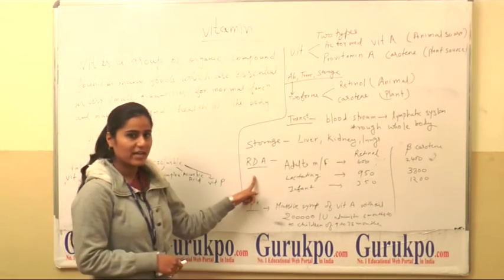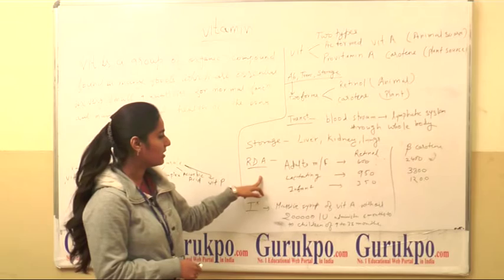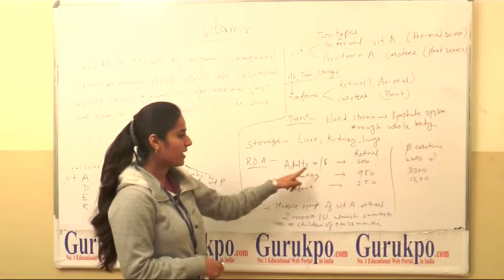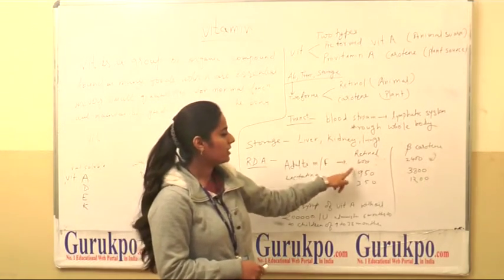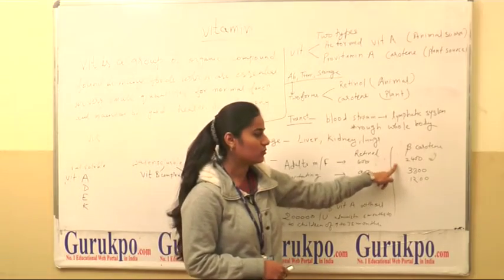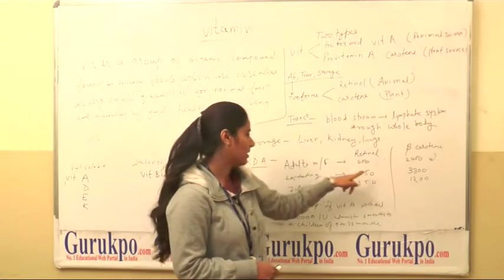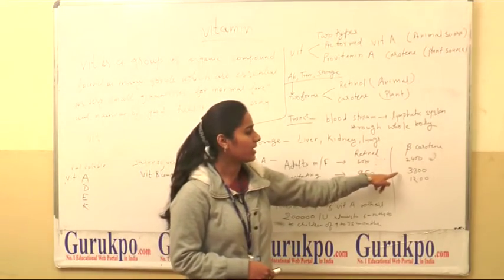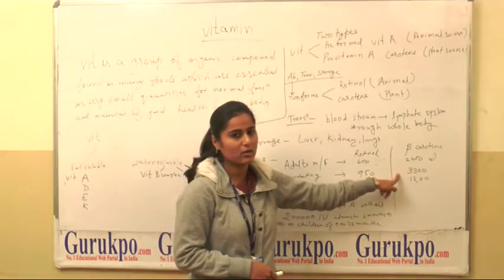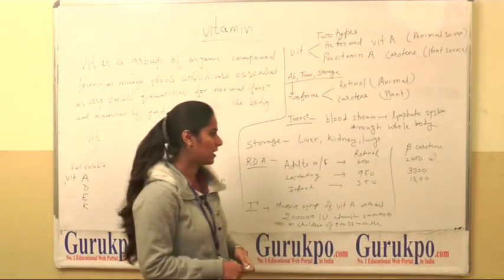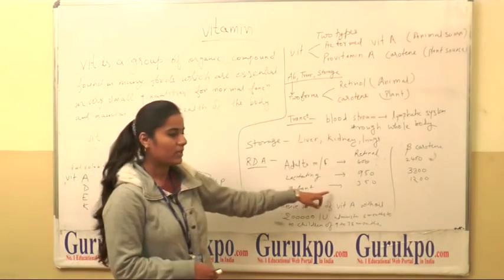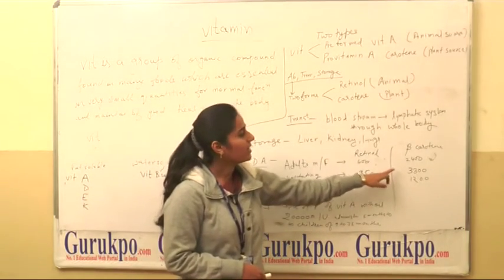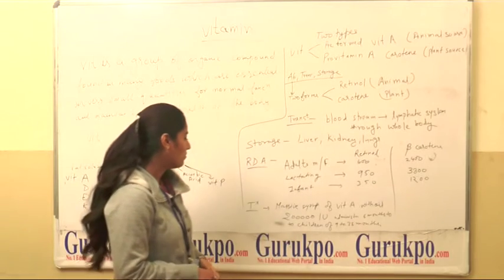Recommended daily allowance of vitamin A: for adult males and females, retinol is 600 micrograms and beta-carotene is 2400 micrograms. For lactating women, 950 micrograms retinol and 3800 micrograms beta-carotene. For infants, 350 micrograms retinol and 1200 micrograms beta-carotene.